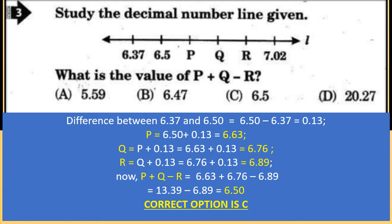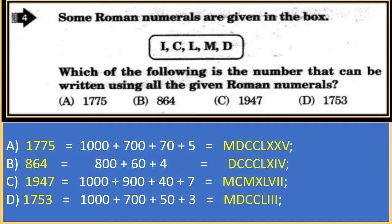Since the distance between two points is 0.13: p = 6.50 + 0.13 = 6.63; q = 6.63 + 0.13 = 6.76; r = 6.76 + 0.13 = 6.89. Substituting into p + q − r: 6.63 + 6.76 − 6.89 = 13.39 − 6.89 = 6.50. The correct option is C.